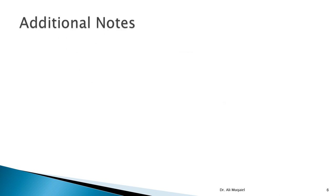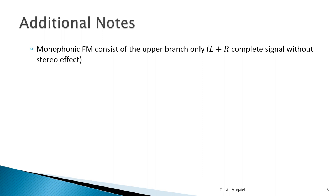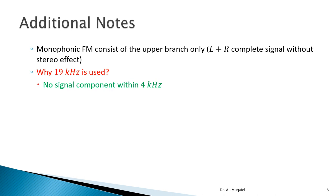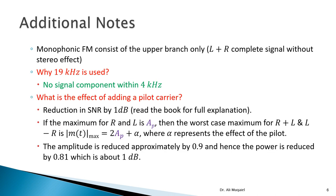Some additional notes: monophonic FM consists of the upper branch only — left plus right — which is the compatible signal. A monophonic receiver will just receive the sum. The reason 19 kHz is chosen is that there is no signal component within the four kilohertz gap shown in the spectrum. Adding a pilot reduces the signal-to-noise ratio because not all power is put into the signal — some power must be allocated to the pilot.